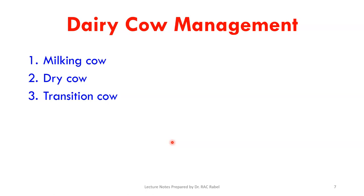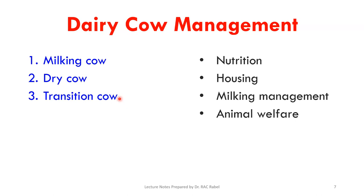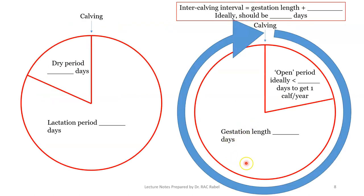Under dairy cow management, Part One, we will be talking about the milking cow, the dry cow, and the transition cow mainly. Under each of these topics we will also cover nutrition, housing, milking management, animal welfare, and we will finish the series off with culling and herd composition.